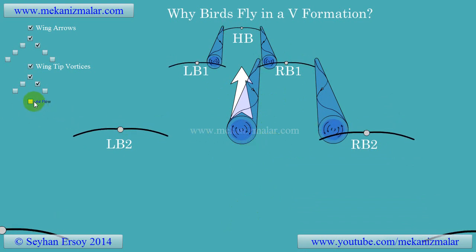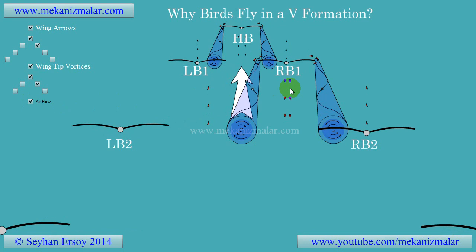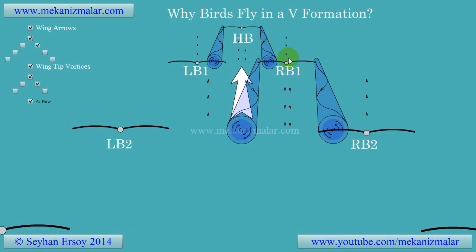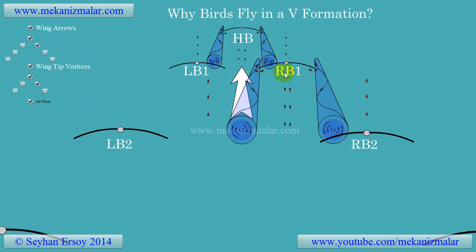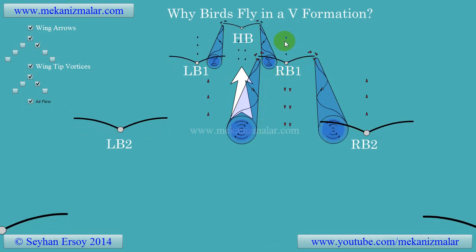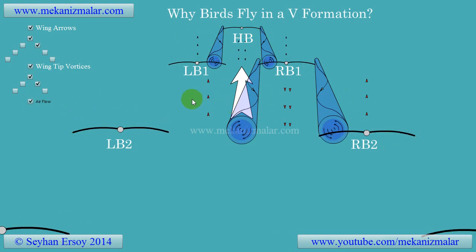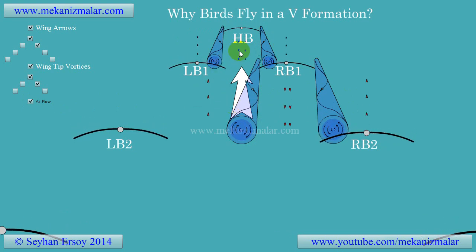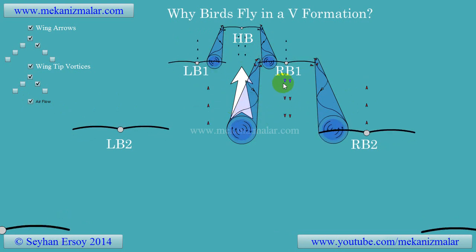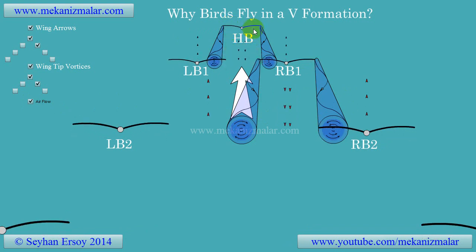Let's see this airflow with the head bird (HB) and the first bird on the right (RB1). As you can see, there is an updraft at the outer edges of the wings and a downdraft between the wing tips. The downdraft is more pronounced due to the combined effects of the two wings.